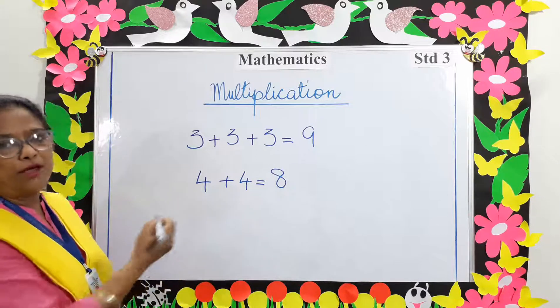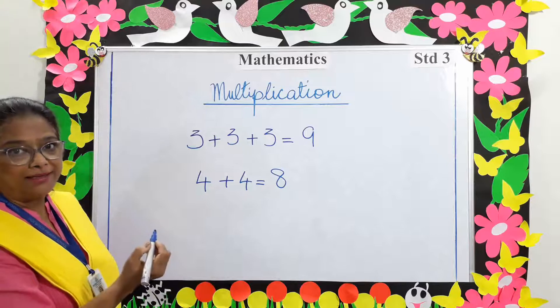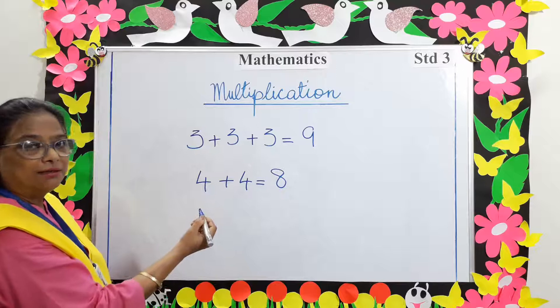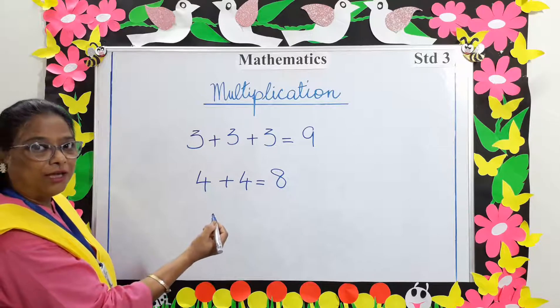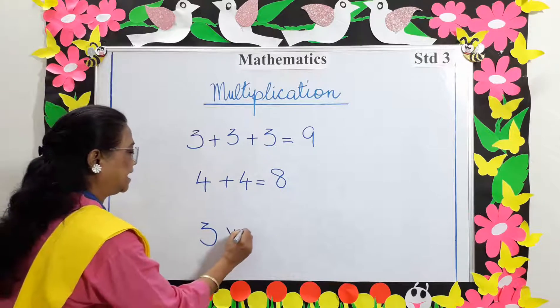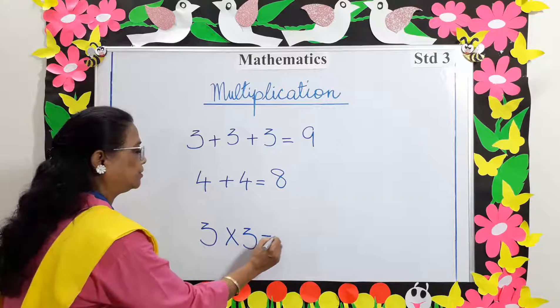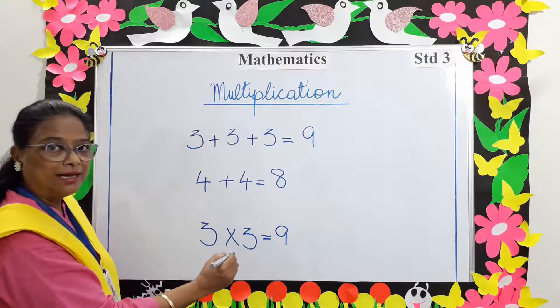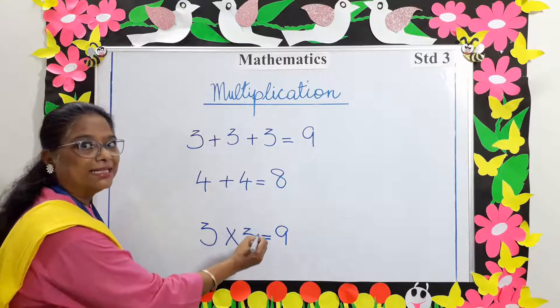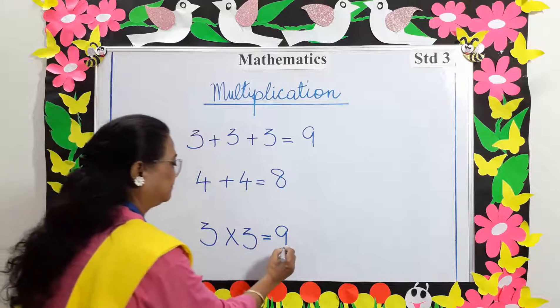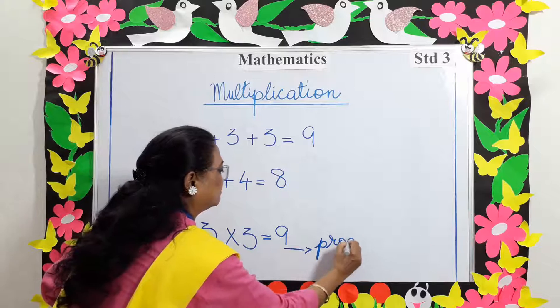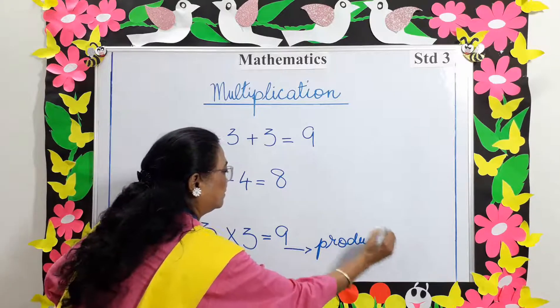There's another way of doing this by multiplying. Here we have added 3 three times, so you multiply 3 by 3. 3 multiplied by 3 also equals 9. 9 is the answer and known as the product.